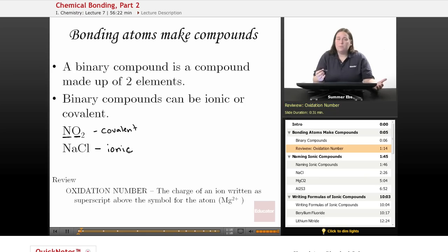What we're going to be using a lot today is oxidation numbers. The oxidation number is the charge of the ion written as superscript above the symbol of the atom. For example, magnesium with 2+ is the superscript oxidation number. We'll use this to figure out bonds and how many of each element we need.